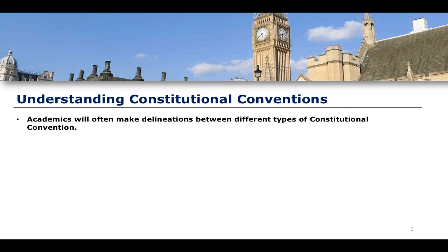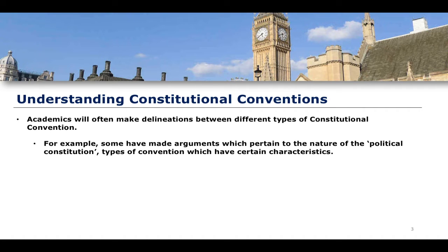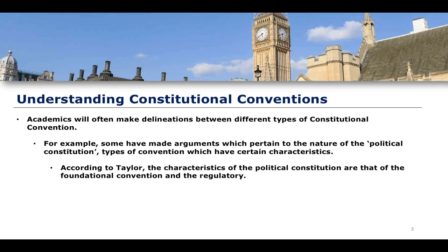The result of this is that we have quite a flourishing debate among academics around the idea of constitutional conventions — making delineations, for example, between the different types of constitutional convention. Some have made arguments which pertain to the nature of this view being something of a political constitution. According to Taylor, the types of convention have certain characteristics on the basis of the formation and formulation of the political constitution.